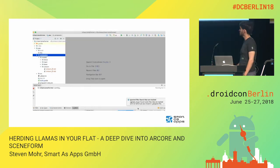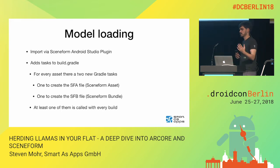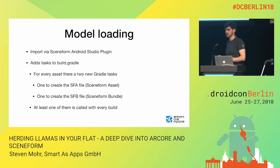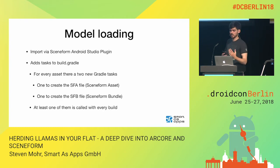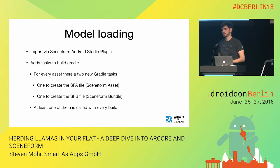The SceneForm plugin will add two new Gradle tasks to your project. One creates a so-called SFA file — a SceneForm asset — which defines how the different files relate. You have an OBJ file for the geometry, different PNGs for textures, and which PNG is used for which channel; all this information is stored in the SFA file. In the second step, a tool converts all these files into one file, the SFB — a SceneForm bundle. You just put this one file in your app and SceneForm knows how to load and display everything included.